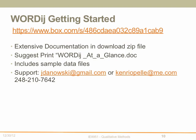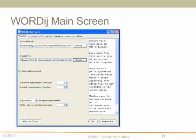For getting started, WordEdge has extensive documentation in a downloadable zip file. I particularly suggest printing the WordEdge at a glance doc, which summarizes all the modules, what input files are required, what comes out, and any other technical specifications. It includes sample data files using Twitter data over two different years early in its life cycle. Support is available from James Danowski at jdanowski@gmail.com, or from Ken Ryapil — you can also call his cell phone at 248-210-7642.